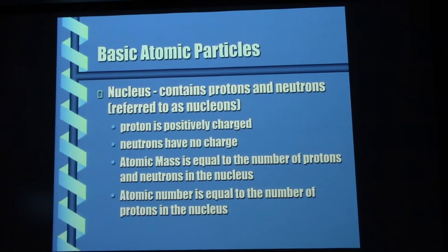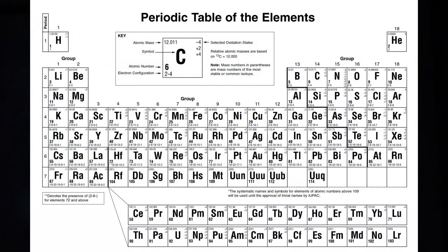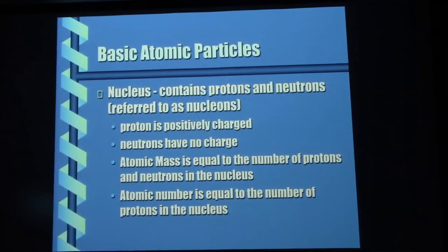Atomic mass — this is ballpark because it's not going to be exact — is the number of protons plus the number of neutrons. The protons are slightly lighter than the neutrons. So if you have an element with more neutrons, it's going to pick up more total mass. For our purposes, it's good enough to say atomic mass is protons plus neutrons. And atomic number is just the number of protons in the nucleus.